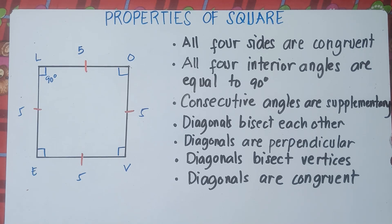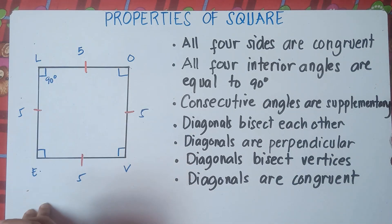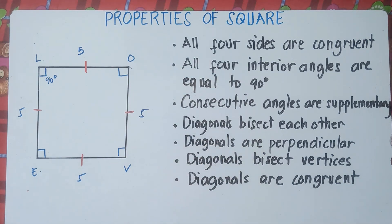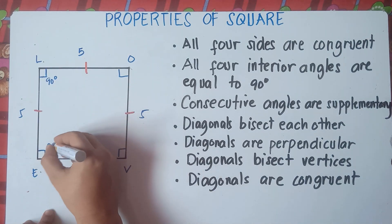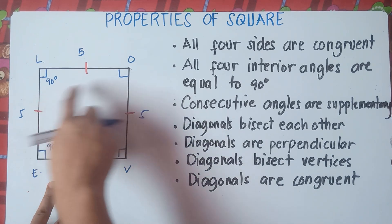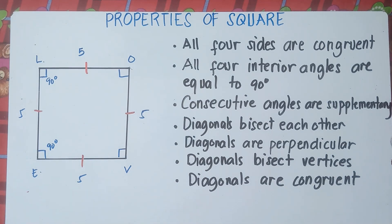Next: consecutive angles are supplementary. Consecutive angles — for example, angle E and angle L are consecutive angles, angle L and angle O are consecutive angles, and angle O and angle V are consecutive angles. Supplementary means the sum of two angles is equal to 180 degrees. So if we add angle E and angle L: 90 plus 90 equals 180. Same for any pair of consecutive angles — they are supplementary.